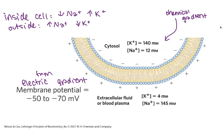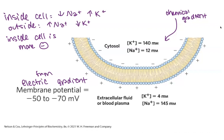If we think just in terms of the chemical gradient, potassium would want to go out and sodium would want to go in. But thinking about the electric gradient: inside the cell has a membrane potential of about minus 50 to minus 70 millivolts, meaning inside the cell is more negative. So both sodium and potassium, based on charge alone, would want to go in. We need to consider both the electric and chemical gradients together.